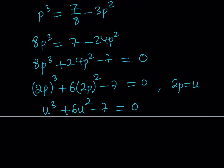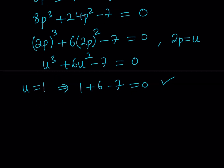This is a monic cubic, which is easier to solve. The first thing to check is the sum of the coefficients: if the sum equals 0, then u equals 1 is a solution. Here 1 plus 6 minus 7 equals 0 — it's verified. So u equals 1 is a solution, which means u minus 1 is a factor.